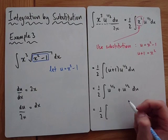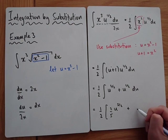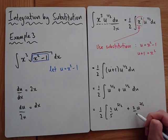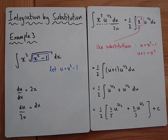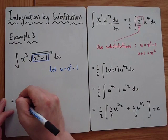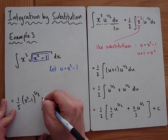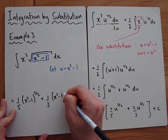Integrating: for u to the 3/2, add 1 to get 5/2 and multiply by 2/5. For u to the 1/2, add 1 to get 3/2 and multiply by 2/3. Add plus c. Then the last step is to write back in terms of x: the answer is one fifth times (x squared minus 1) to the power 5/2, plus one third times (x squared minus 1) to the power 3/2, plus c.